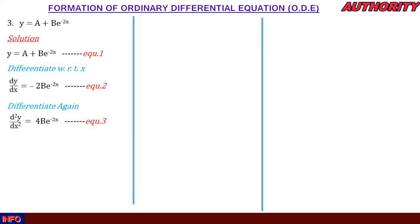We can rewrite equation 3 as d²y/dx² = −2·(−2b·e^(-2x)). The expression −2b·e^(-2x) inside the bracket is exactly dy/dx from equation 2. So we can substitute equation 2 into this expression.